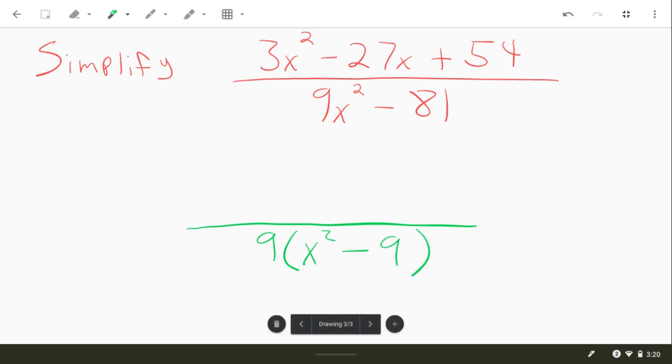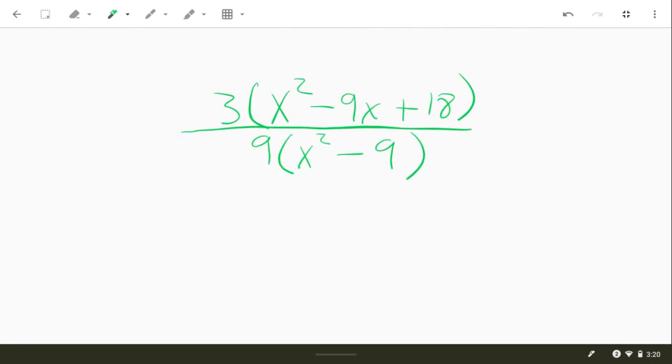And then on the top, they have a 3 in common, all three terms. 3 times 9 will give us 27 and 3 times 18 will give us the 54.